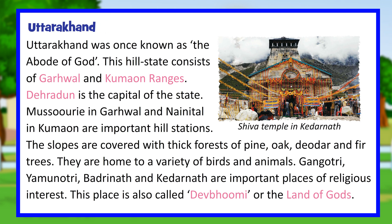Uttarakhand, once known as the abode of God, is a hill state consisting of the Garhwal and Kumaon ranges. Dehradun is its capital. Mussoorie in Garhwal and Nainital in Kumaon are important hill stations. The slopes are covered with thick forests of pine, oak, deodar, and fir trees, home to a variety of birds and animals. Gangotri, Yamunotri, Badrinath, and Kedarnath are important religious sites, earning the state the name Devabhumi, or the land of gods.